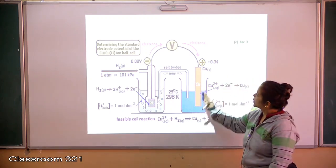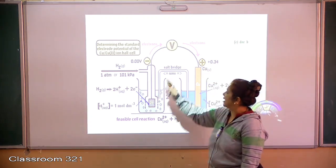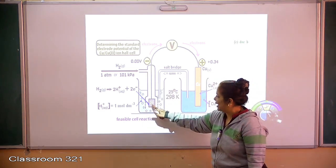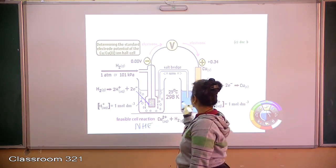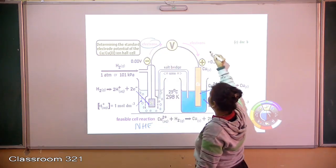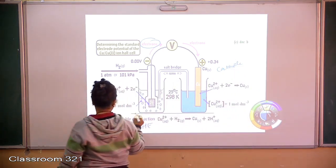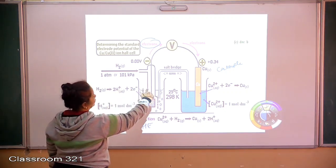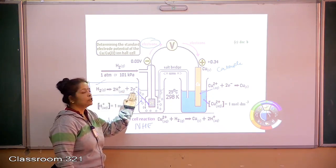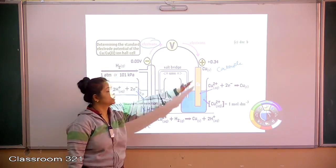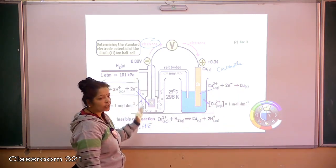This is how we go about it. The cell is constructed by dipping a copper electrode into copper sulfate solution and connecting it to a NHE — platinum dipped in acid solution with hydrogen gas. The electron movement is from left to right, which means the NHE is acting as the anode and copper is acting as the cathode. The NHE undergoes loss of electrons: H₂ → 2H⁺ + 2e⁻, while copper ions gain the two electrons to become copper.